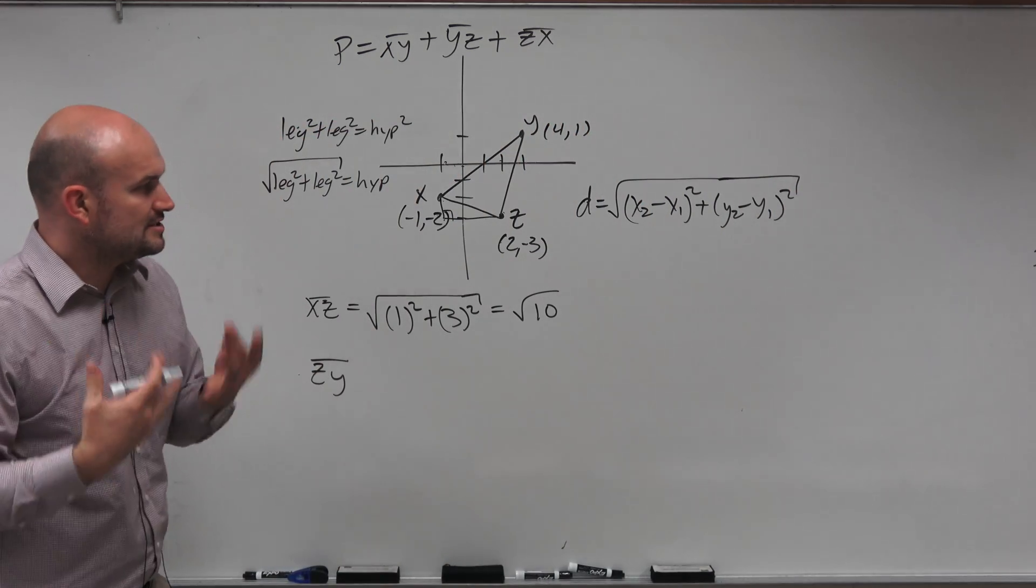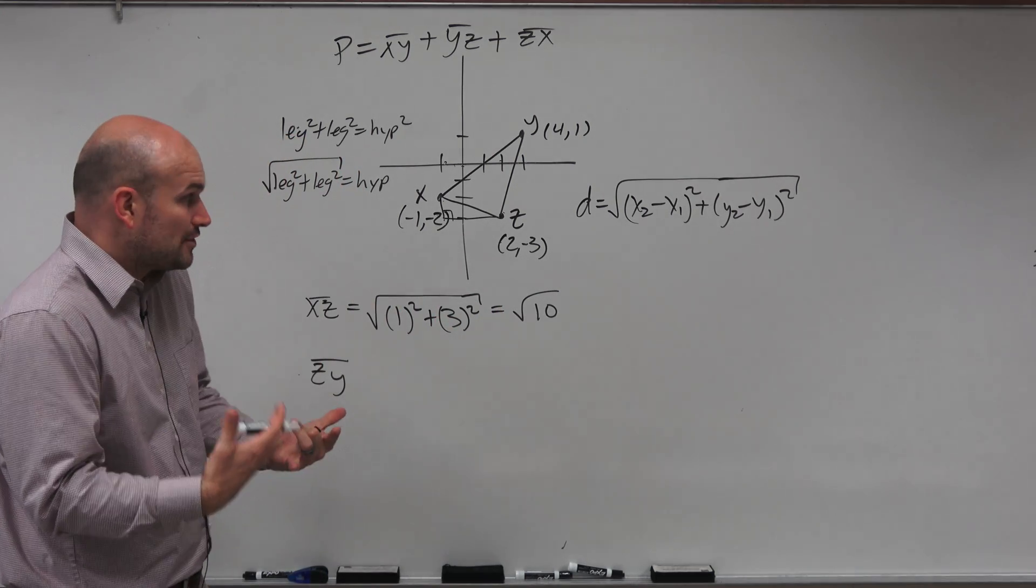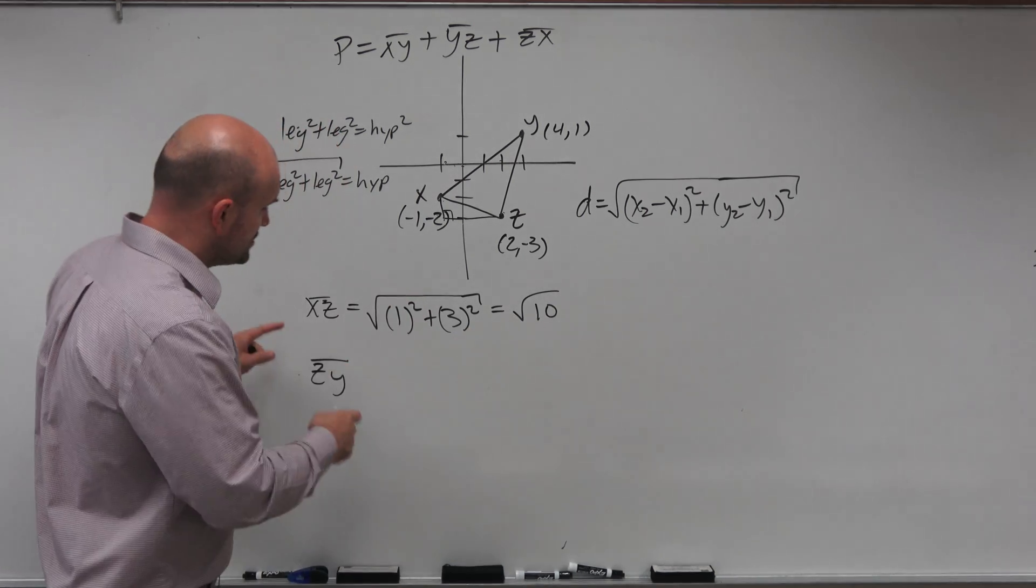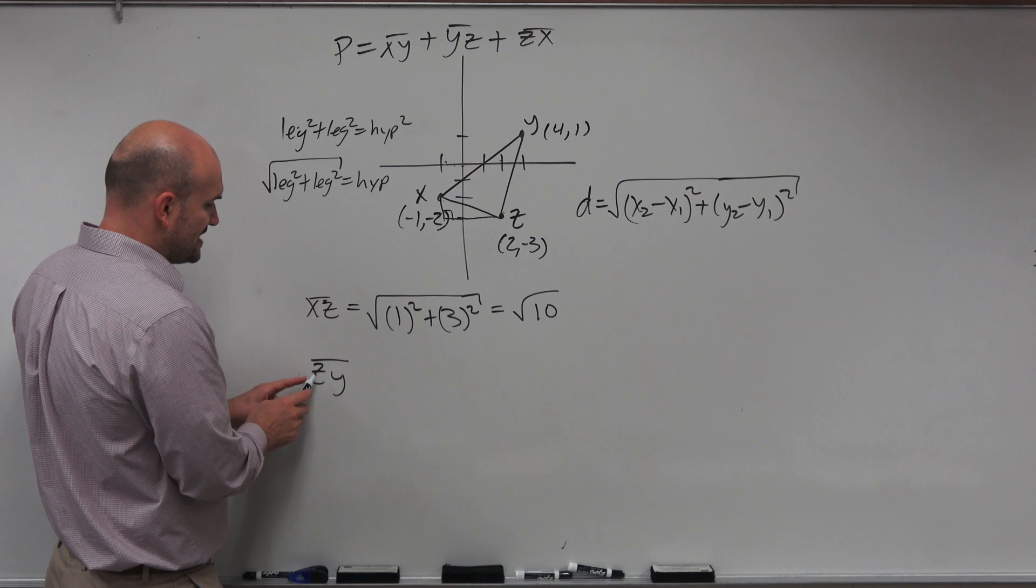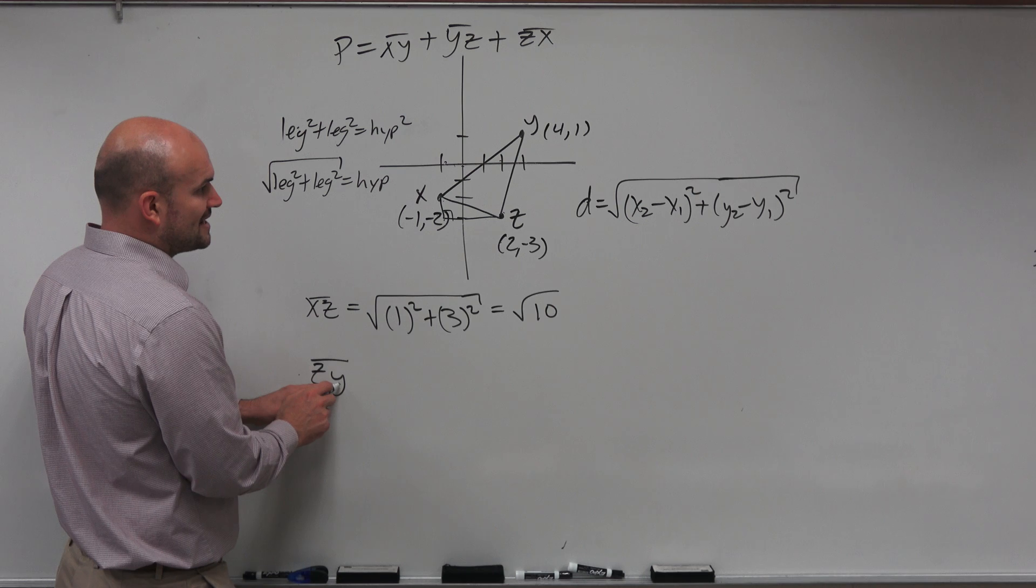So now, here's the important thing. Which one is your x2, y2? Which one is your y1, x1? It doesn't matter again, because it's either going to give you a positive or negative value, and the value gets squared. So what I like to do is I like to always have z be first, and then y. So this is going to be my x1, y1, and this would be my y2, x2.